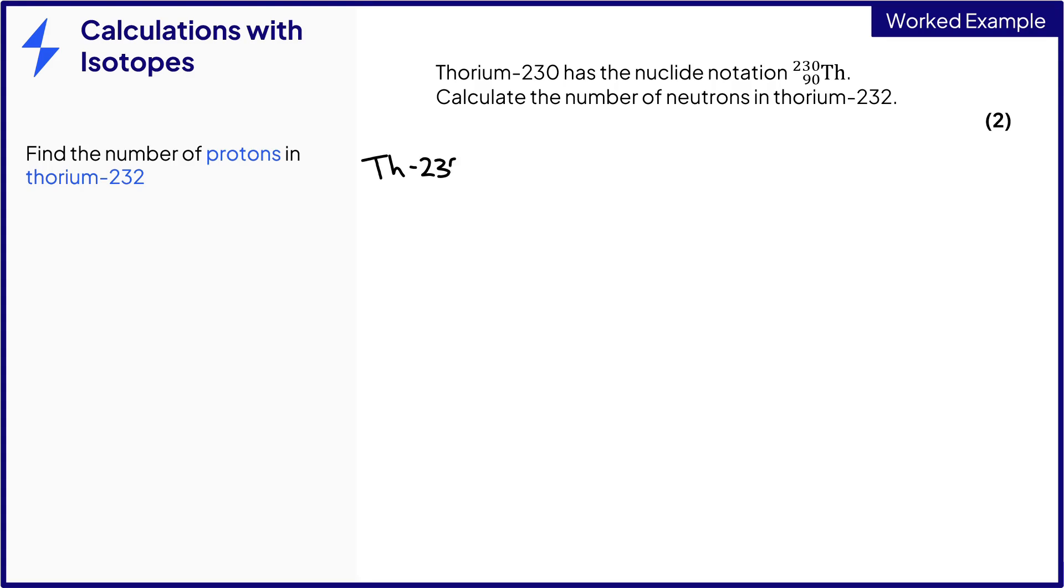By spotting that thorium-230 and thorium-232 are isotopes of the same element, we can deduce they have the same number of protons. So thorium-232 has 90 protons as well. That gains the first mark.